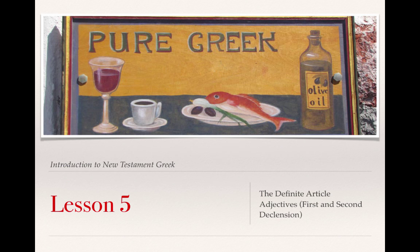That's the end of this lesson on Lesson 5 — the definite article and adjectives. I encourage you to go back and review the part of the lecture discussing the three different functions of adjectives, as this is a place where students often get held up. Review those rules in Croy before starting the practice and review exercises, so you have a solid understanding of the different adjective functions and how to identify which type you're working with. Thank you for your attention.